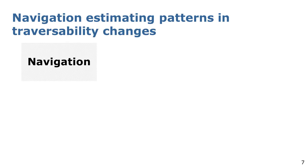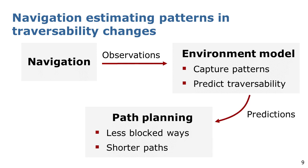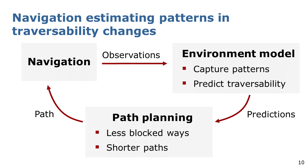When deployed for longer periods of time in such environments, a robot observes these patterns. In this work, we aim at using the robot observations to learn a model of the environment that captures the patterns and exploits them to predict the traversability at unknown regions. We then use the predictions to plan paths that reduce the risk to encounter blocked passages and lead the robot to navigate along shorter paths in the long run.